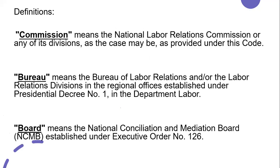Let's go to the terminologies. Commission means the National Labor Relations Commission (NLRC) or any of its divisions as the case may be — it is just a shortcut so the law does not need to spell out NLRC every time. Bureau means the Bureau of Labor Relations and/or the Labor Relations Divisions in the regional offices established under PD No. 1 in the Department of Labor. Board means the National Conciliation and Mediation Board or NCMB. Council means the Tripartite Voluntary Arbitration Advisory Council. Remember these terms.